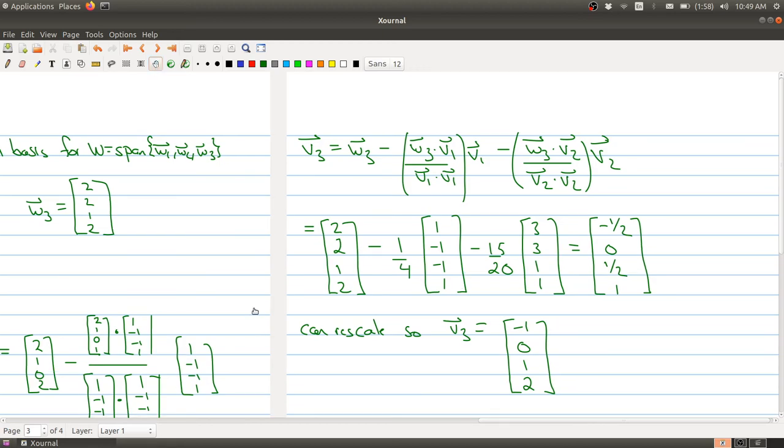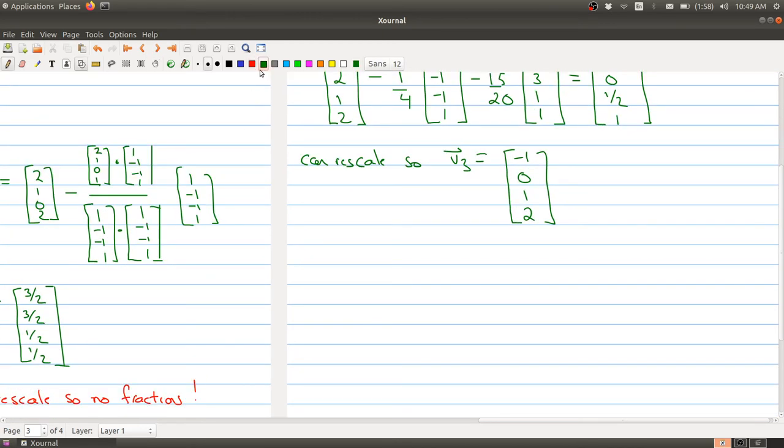So putting all the pieces together, we have the following. So the following three vectors: 1, minus 1, minus 1, 1, comma, 3, 3, 1, 1, comma, and negative 1, 0, 1, 2 is an orthogonal basis.